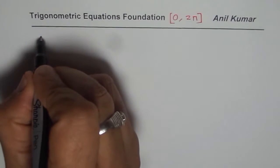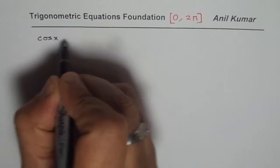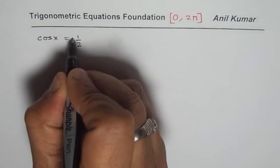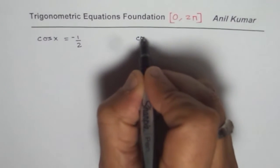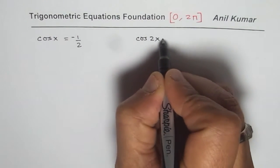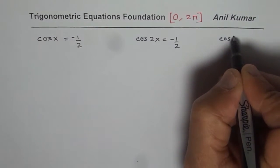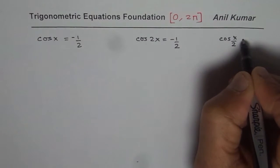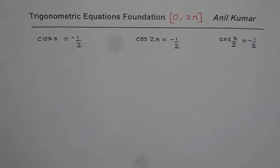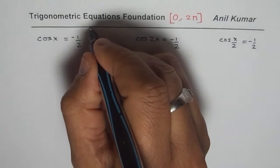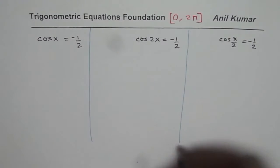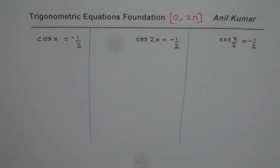The examples are cos x equals minus half, cos 2x equals minus half, and cos of x by 2 equals minus half. We have these three basic equations and we'll try to figure out how to solve these equations. This question may not look very difficult but here all the concepts lie.